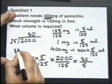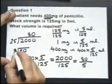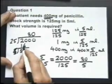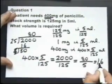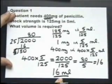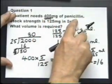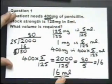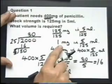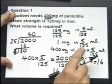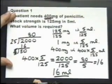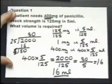We do a little division: fives into 80 — fives into eight goes once with three remainder, and fives into 30 goes six — so we're left with an answer of 16. Therefore, 400 milligrams of penicillin will be found in 16 millilitres of the medicine. That's the unitary method: working out that one milligram is found in 5/125 millilitres. Quite a hard question — let's move on to question two.